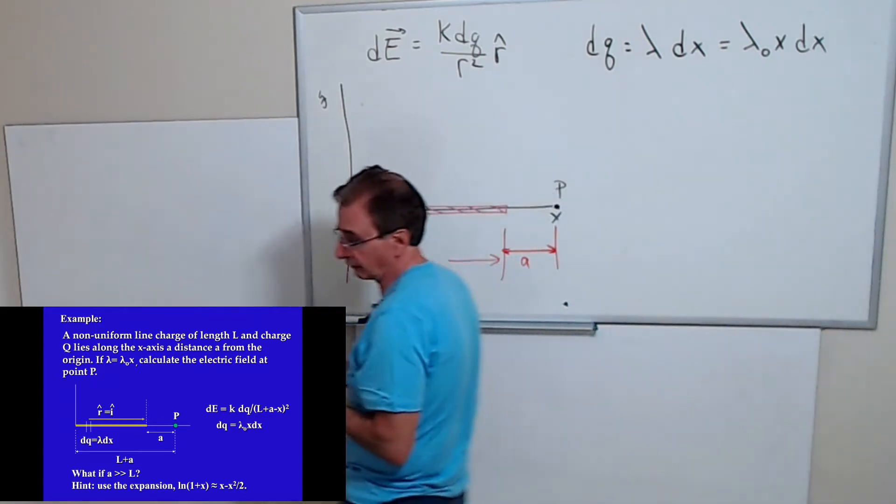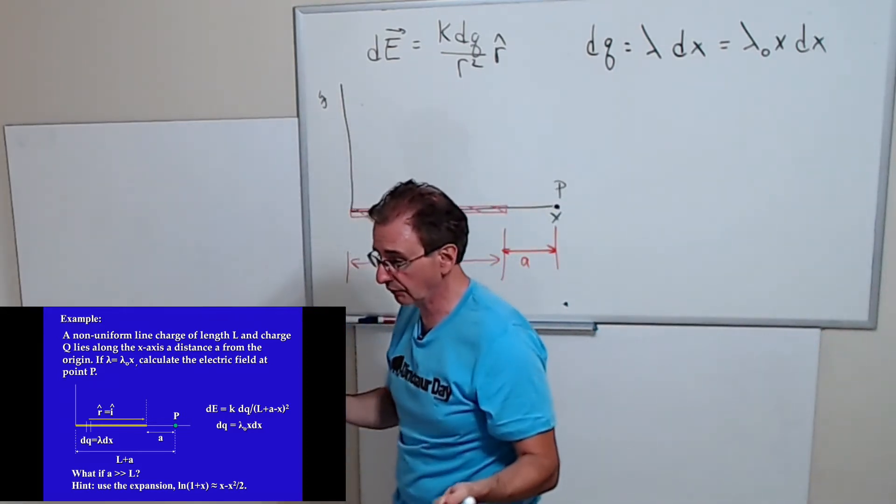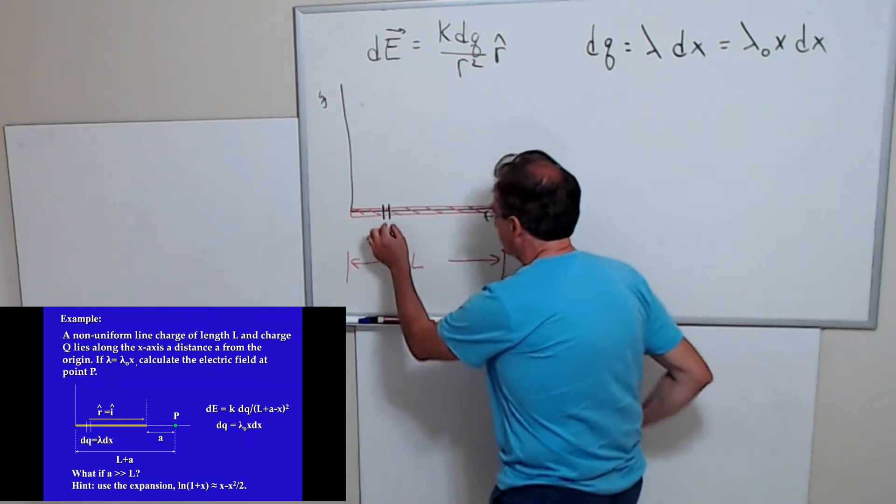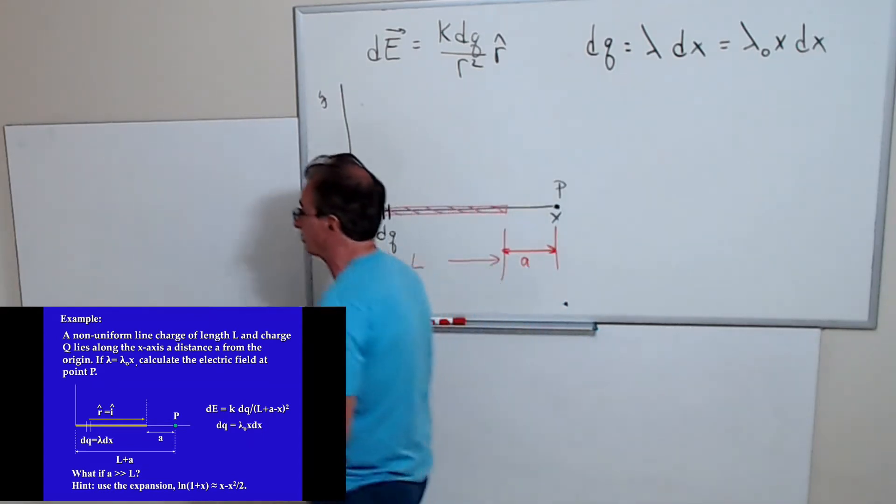If I integrate my dQ expression over the entire rod, that means I'm summing all my dQ together, I should get the total charge Q.